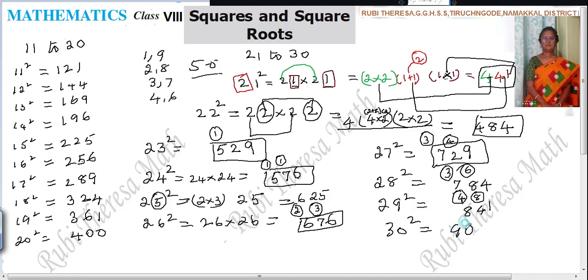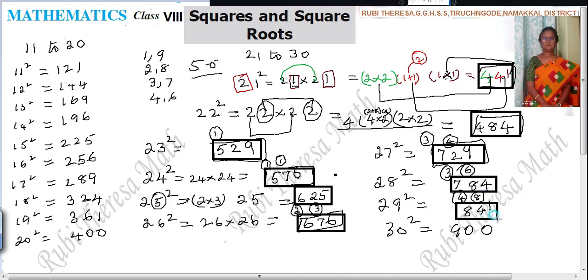Then 30 square. That is 900. Just you observe the answers. 21 square is 441. 22 square is 484. 23 square is 529. 24 square is 576. 25 square is 625. Then 26 square is 676. 27 square is 729. 28 square is 784. 29 square is 841. Then 30 square is 900.